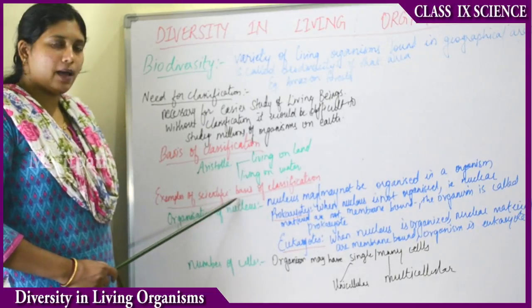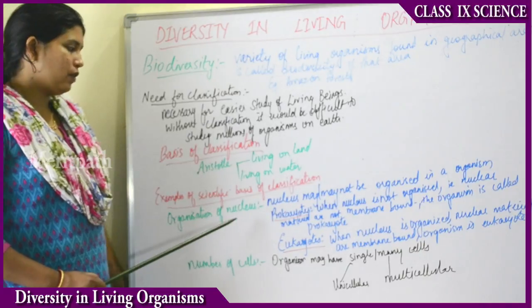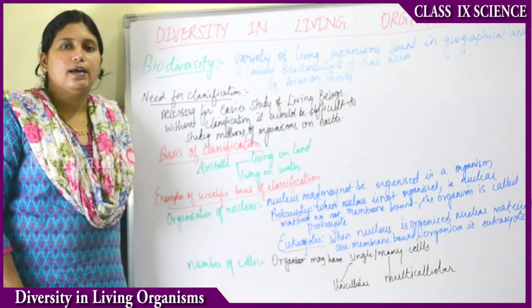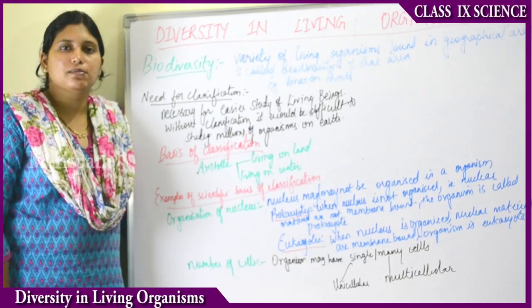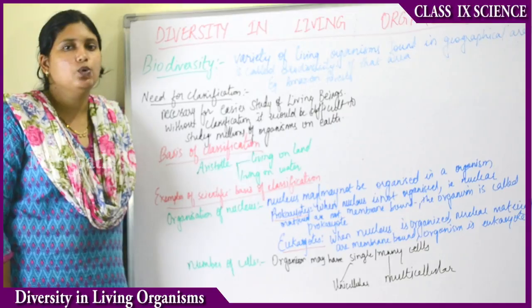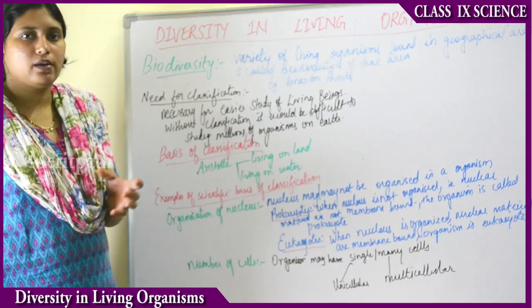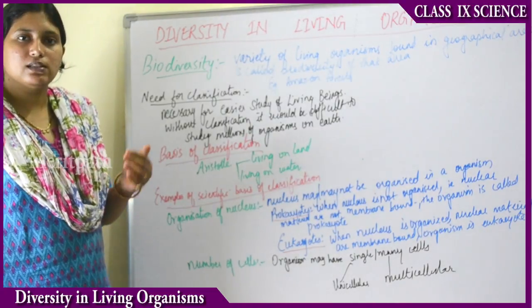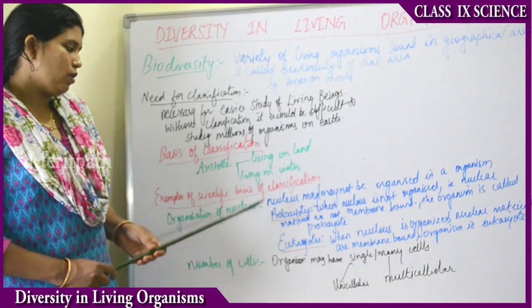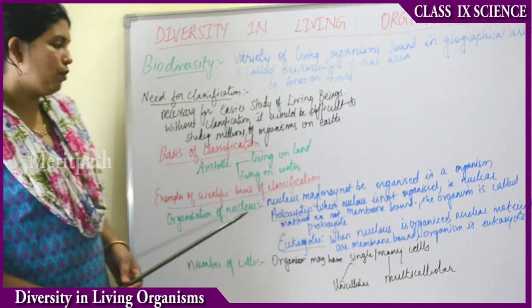The first scientific basis of classification was the organization of the nucleus. Every organism is made up of cells, and the cell has a nucleus — a small organelle. Some organisms have cells with a nucleus, and some organisms have cells without a nucleus. Based on nucleus organization, organisms are of two types.